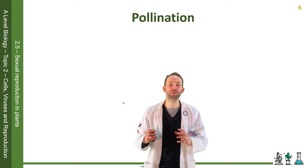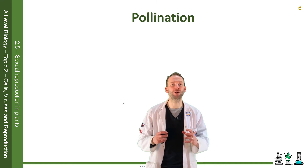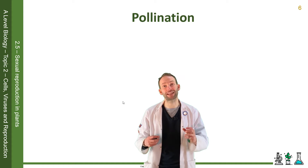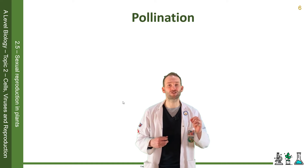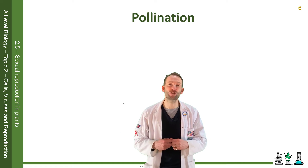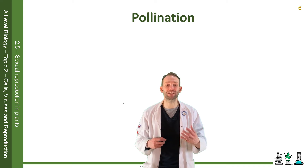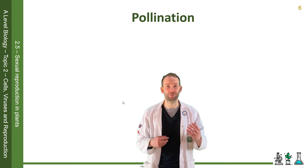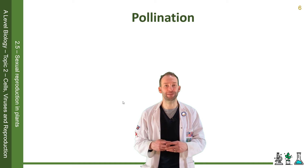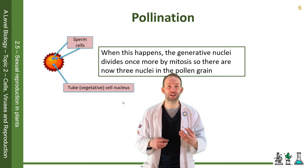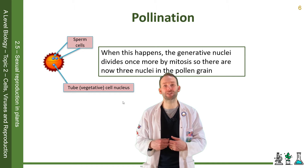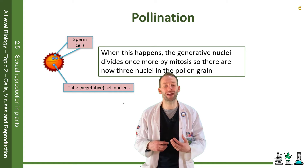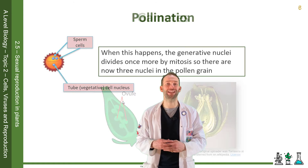The pollen grains must be transferred from the anthers of a flower to the stigma in the process of pollination. If this occurs within the same flower it's called self-pollination; if the pollen grains are transferred to a different flower it's called cross-pollination. Pollination can occur by either wind or by an insect carrying the pollen from anther to stigma. When this happens, the generative nucleus divides once more by mitosis, so there are now three nuclei in the pollen grain after pollination has occurred.